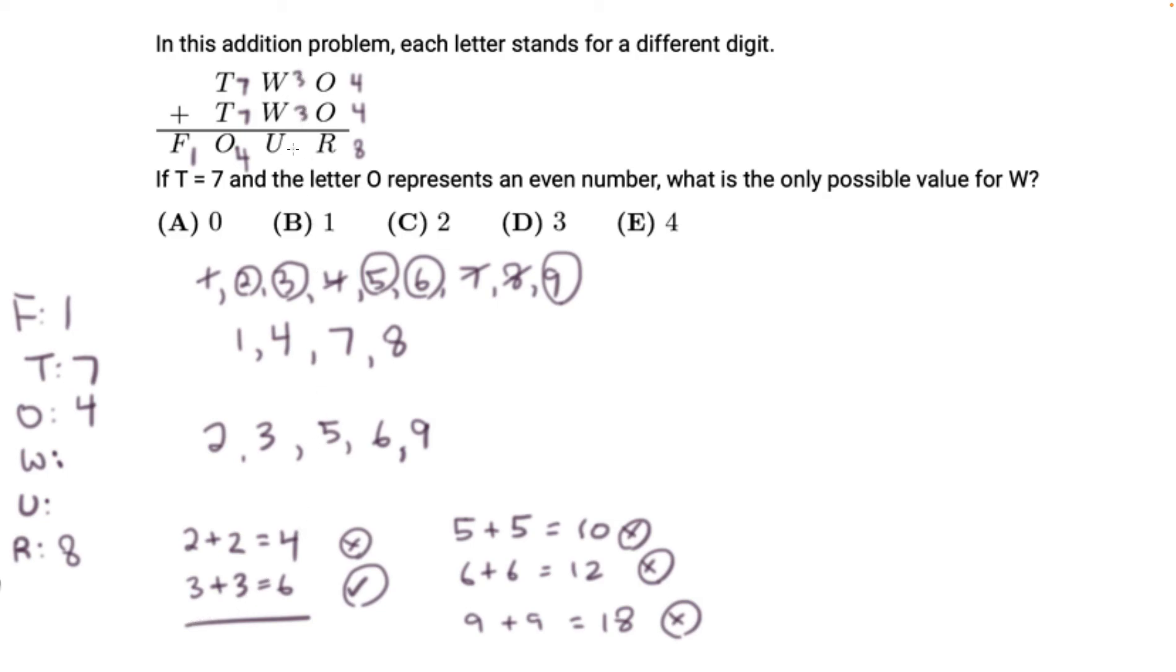So we have W equals 3 and U equals 6. So the only possible value for W is 3. So our choice is D.